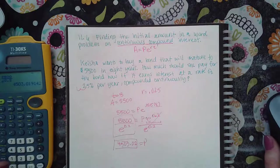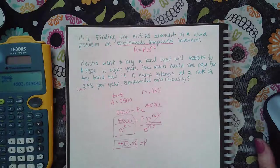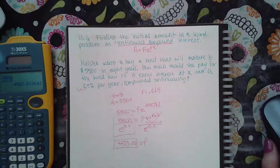If it does tell you to round to the nearest dollar, then only put $4,503. But if it says round to the nearest cent, then you put the two cents.